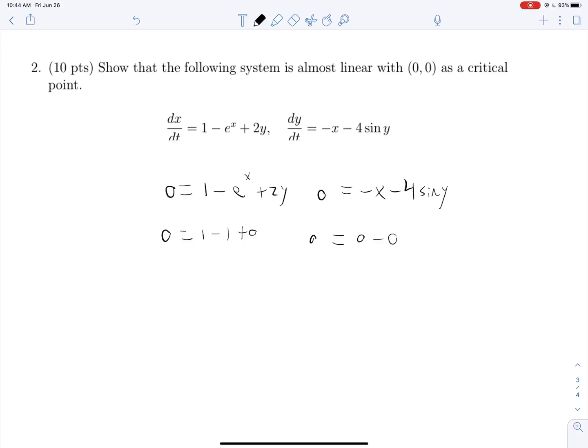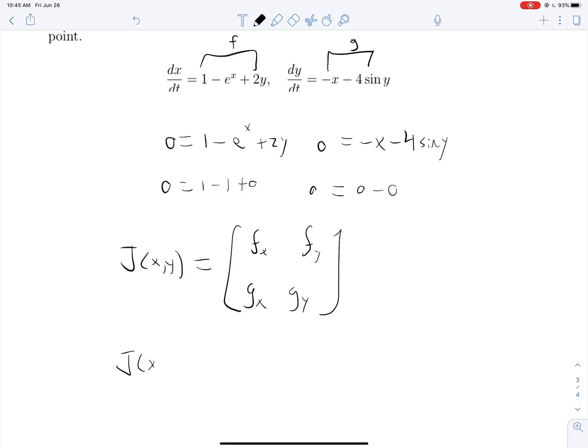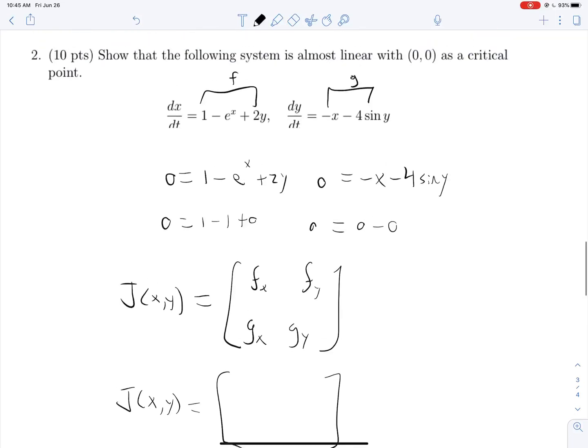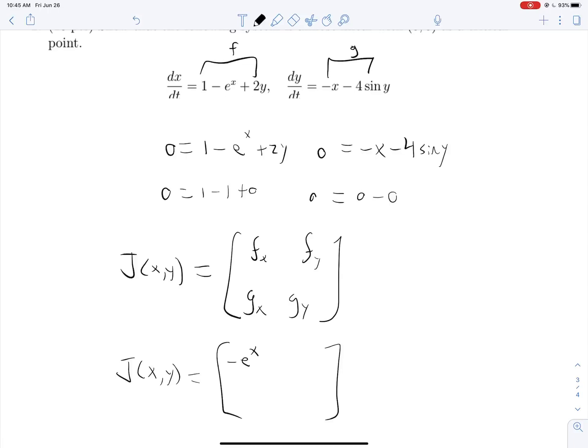Plug in (0,0) here. We get 0 equals 1 minus 1 plus 0, which is true. And 0 equals 0 minus 4 times sine of 0, which is 0. That is a critical point. To prove the system is almost linear, we'll have to fully linearize it with our Jacobian matrix.